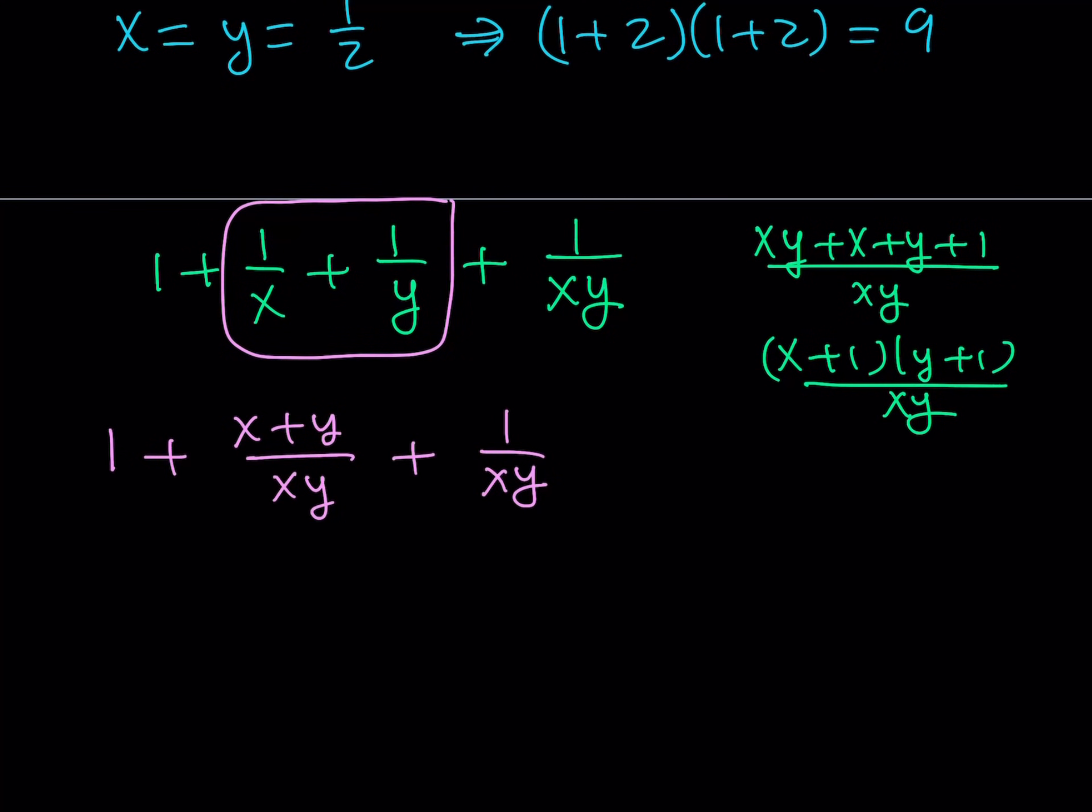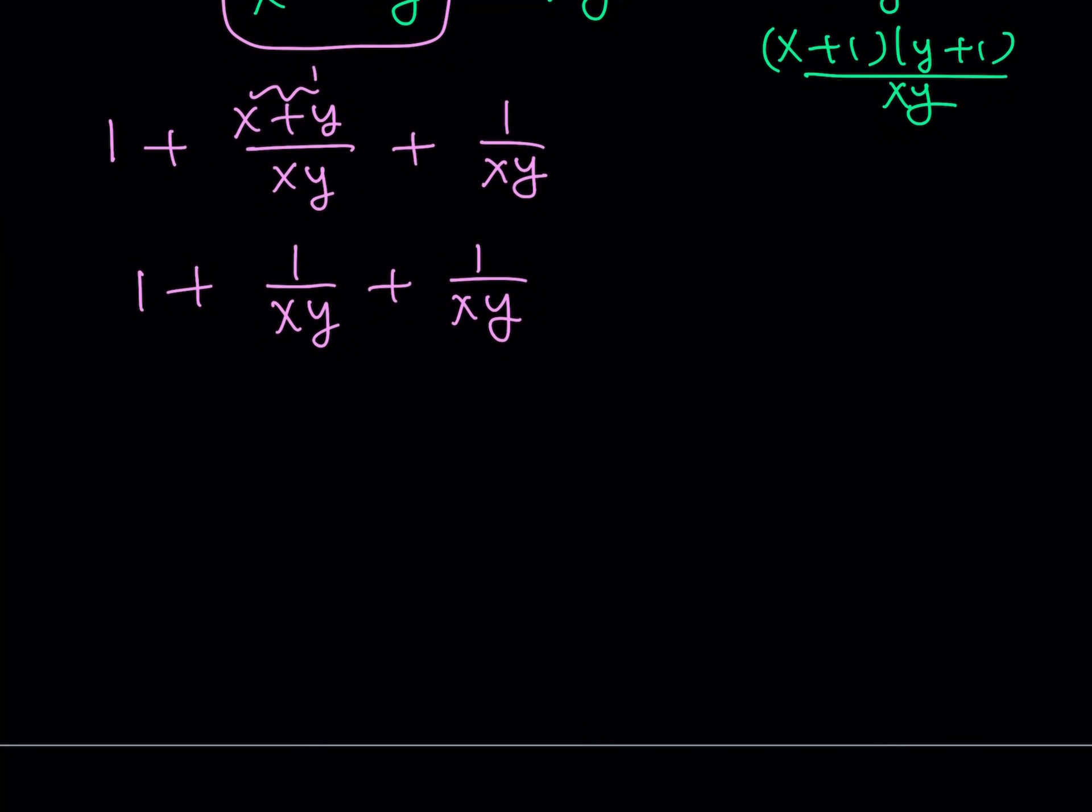For example, if I take these two expressions and put them together, I'll be getting something nice. Because this gives you 1 plus x plus y over xy plus 1 over xy. So, it's better not to make a common denominator for the whole thing. Well, we do know that x plus y is equal to 1. So, we can just go ahead and replace x plus y with 1.